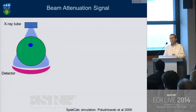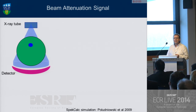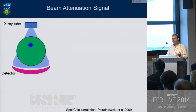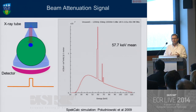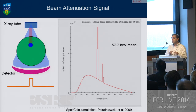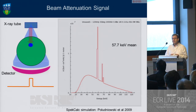We all know beam hardening. In this simulation, I'm going to use the SPECTCalc algorithm to simulate the artifact, and then I'll talk you through the actual research. Basically, we have a beam spectrum that actually travels through the scan field. And if we stick a metal rod in the beam path, we get an attenuation signal recorded from that piece of metal.